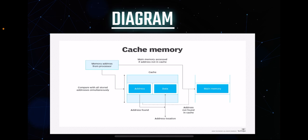The L1 cache, closest to the CPU, is the smallest but fastest cache and holds a subset of the most frequently accessed data and instructions. L2 cache is larger than L1 and serves as a secondary cache layer, storing additional data and instructions to support L1. L3 cache, the largest and slowest of the three, acts as a shared cache for multiple cores or processors within a system. The arrows in the diagram indicate the flow of data and instructions between the different cache levels and the CPU.